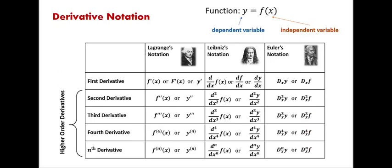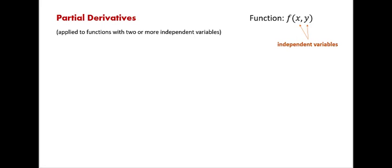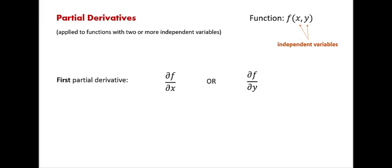Now, as we've gotten familiar with different derivative notations, let's talk about partial derivatives. We apply partial derivatives to functions that have more than one independent variable. In this case, the function notation can be written as f of x, y, where both x and y are independent variables. Since there are two independent variables, there are two options for the first partial derivative.